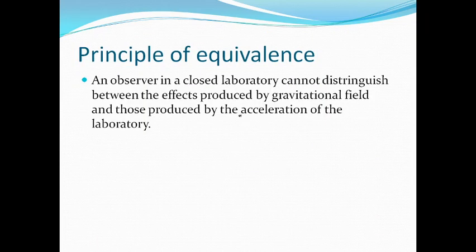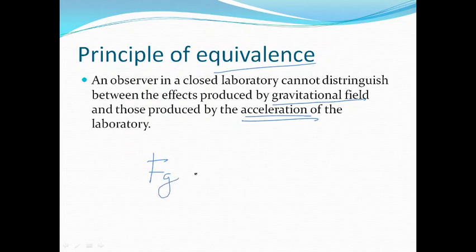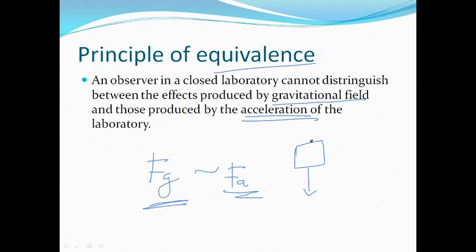Another part of this theory is the principle of equivalence, which states that an observer in a closed laboratory cannot distinguish between the effects produced by a gravitational field and those produced by the acceleration of the laboratory. For example, if somebody is closed in a box under the effect of gravitational force, or alternatively is accelerating, this person inside the box cannot distinguish between the force due to gravity and the force due to acceleration.